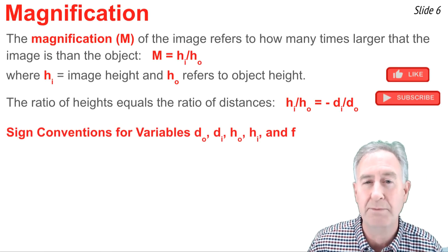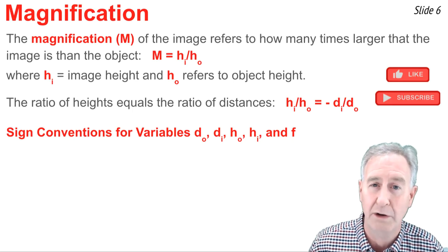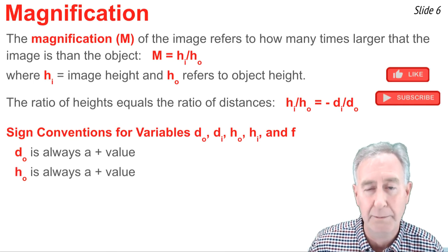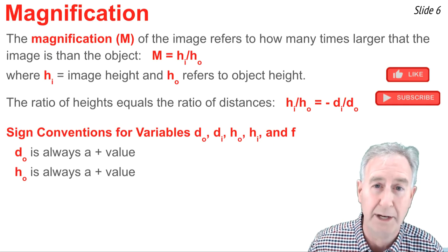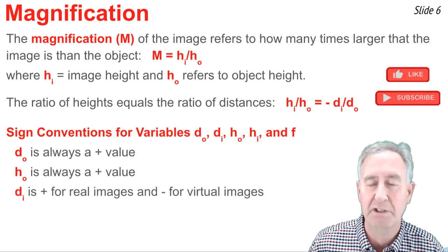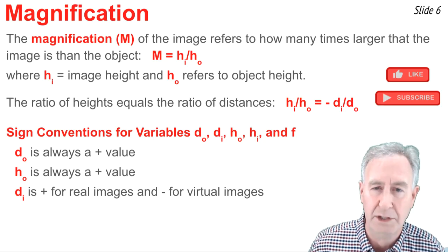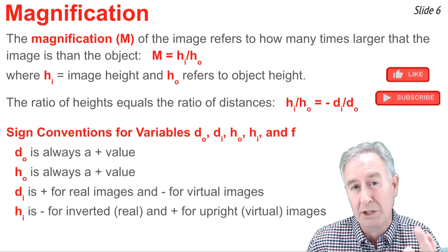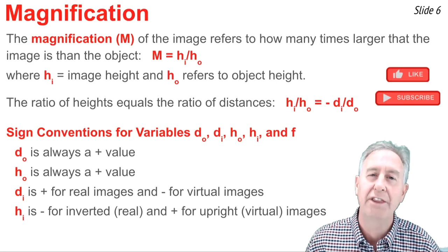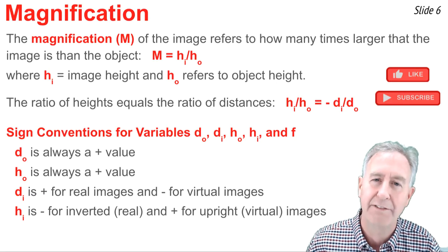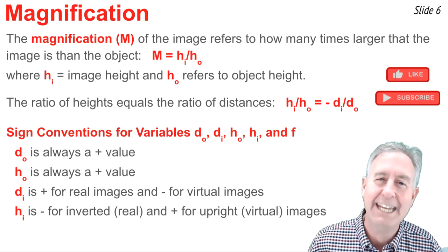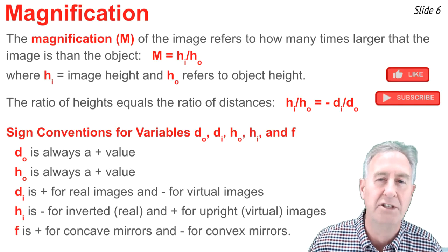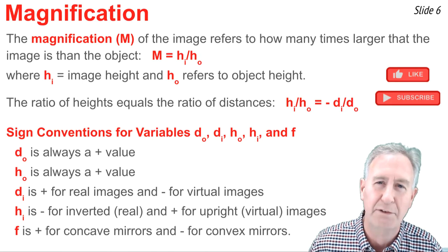Now, once more, one of the difficult things about this is having a good handle on the sign conventions for d_i, d_o, h_i, h_o, and f. So for d_o, it's always going to be a positive value, and the same is true for h_o. The object height and object distances are always assigned positive values. But d_i can be positive or negative, as we've already discussed. It's positive for real images, and it's negative for virtual images. As for the h_i, the image height, it's positive for upright images and negative for inverted images. The upright images are your virtual images, so you get a positive h_i value for upright virtual images, and a negative image height for inverted real images. Finally, there's the focal length, and as we've spoken, focal lengths can be positive or negative, positive for concave mirrors, and negative for convex mirrors.